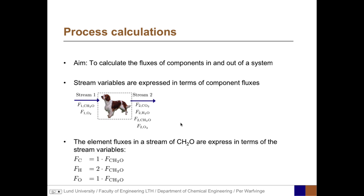The element fluxes in a stream of, for example, CH2O are expressed in terms of the stream variables representing the component fluxes. For example, the molar flux of C equals one times the molar flux of CH2O, simply because there is one carbon atom in each molecule of CH2O. Regarding hydrogen, the hydrogen molar flux equals two times the molar flux of CH2O, because there are two atoms of hydrogen in each molecule of CH2O.